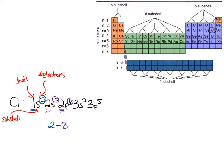For the third energy level, wherever there is a 3 in front represents the third electron shell. I add up the numbers: 2 electrons in the s subshell and 5 in the p, so in total that gives me 7. There are no electrons in the fourth energy level because there are no parts of the configuration with a 4 in front. This dashed way is a good way of showing how many electrons are in each shell.